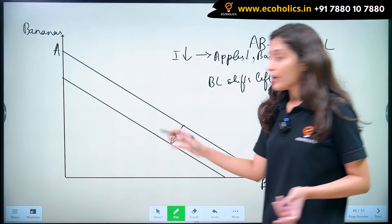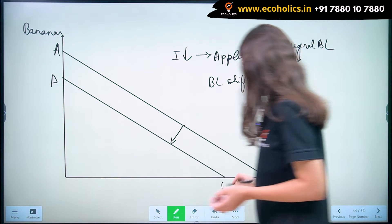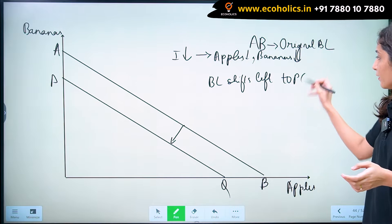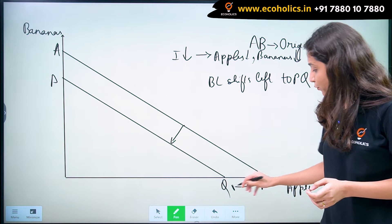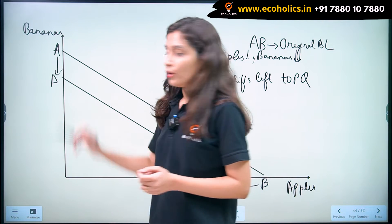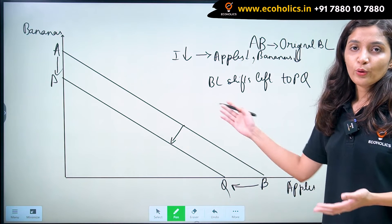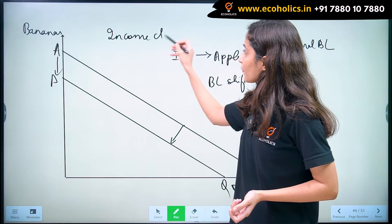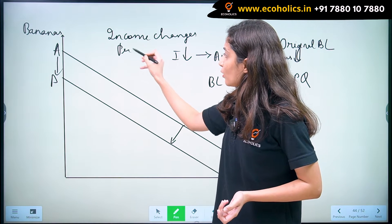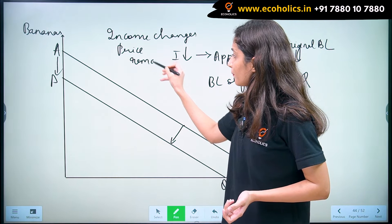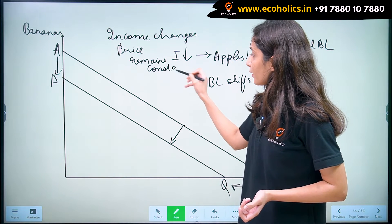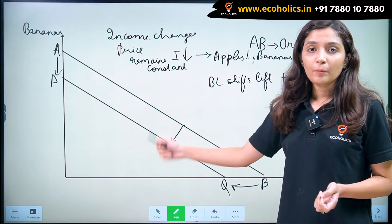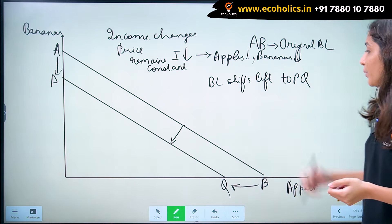And therefore, let's say our new budget line is PQ. So in this case the budget line shifts left to PQ. The consumption of X falls, and the consumption of Y also falls. This is all about decrease in income. In both these cases — increase and decrease in income — when our income changes, our budget line shifts, and the new budget line is parallel to the original budget line.